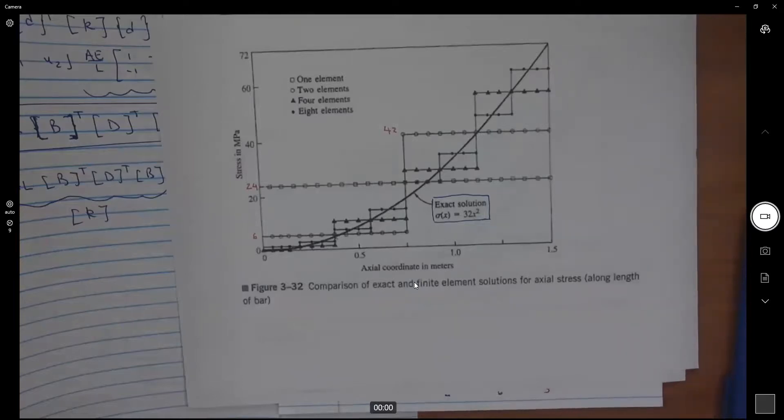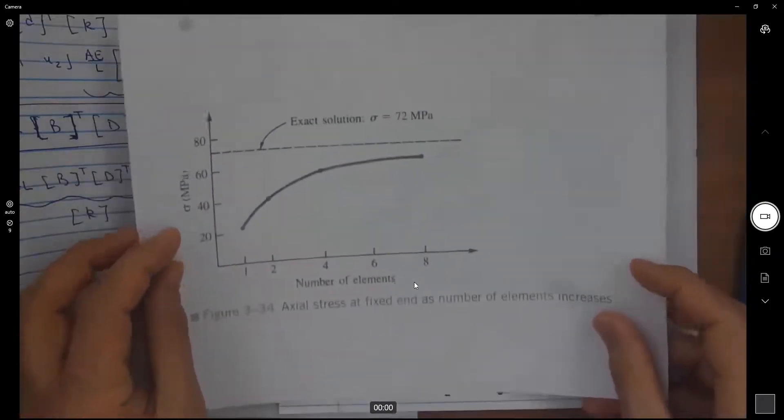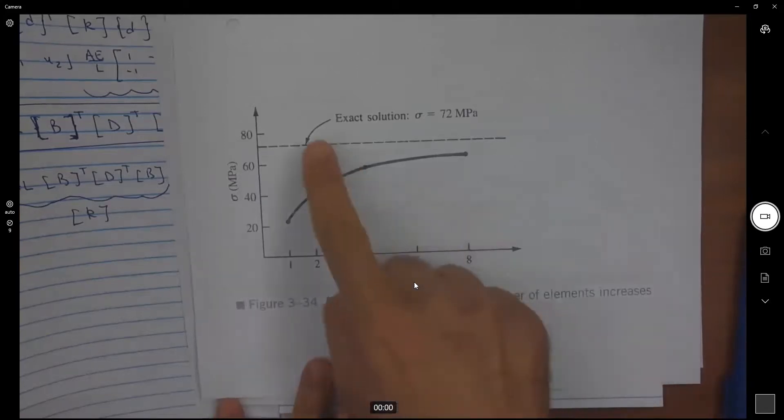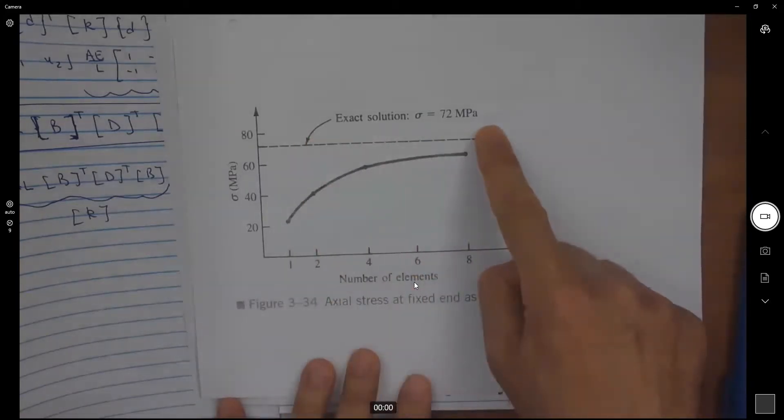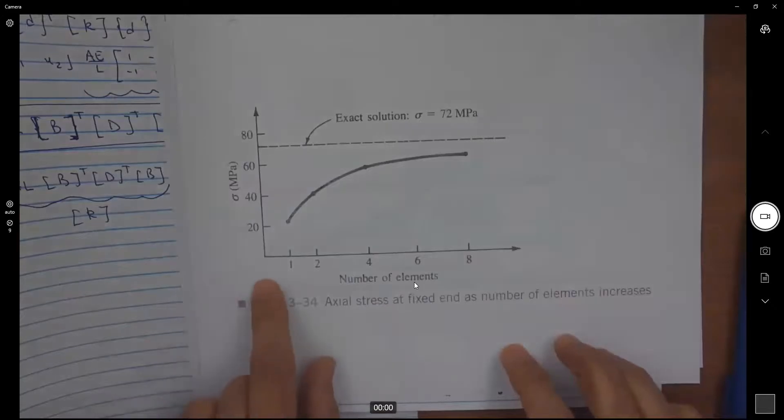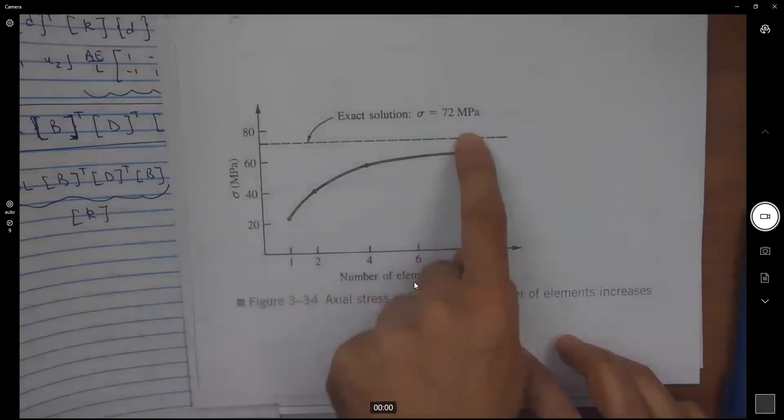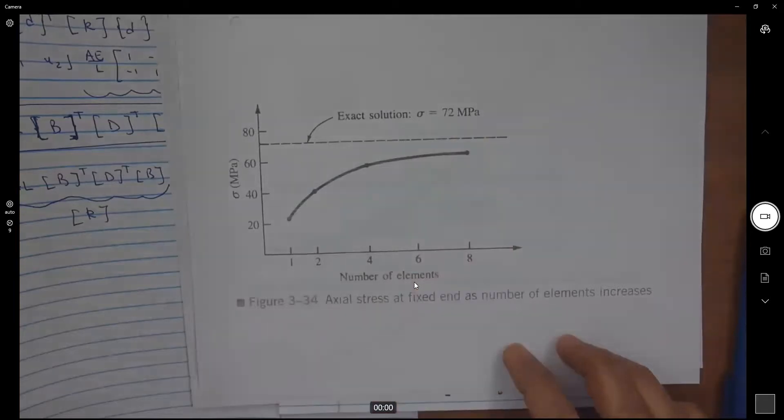It's still not going to be accurate. I know I have to end here, but I'm going to leave you with one thing to think about. A convergence chart. If I compare the exact solution stress and the solution that I use using one, two, four, and eight elements, you can see as the number of elements increase, I get closer to the exact solution. But I'm never there with stress.